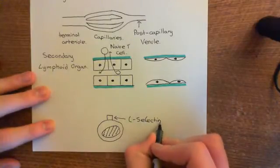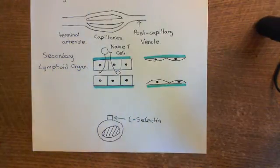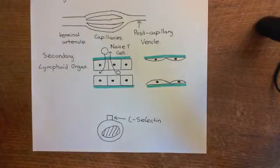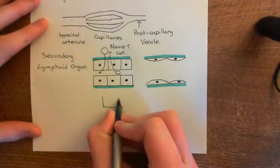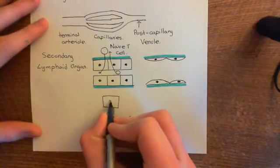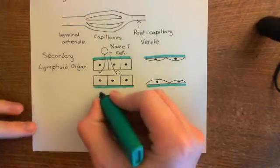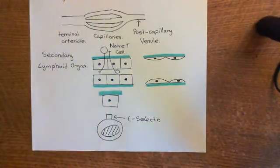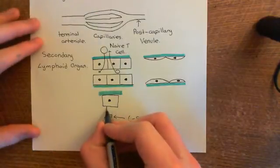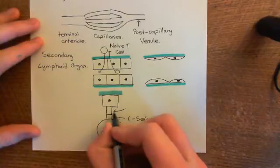These high endothelial venules have on their surface a cell adhesion molecule which is going to bind with the L-selectin. Let's draw a high endothelial cell here. Here we have its nucleus, and it's sitting on the basement membrane again. So here's our basement membrane in turquoise. The cell adhesion molecule that these high endothelial cells have is known as Glycam-1.